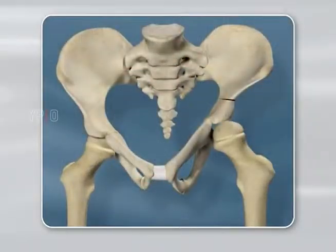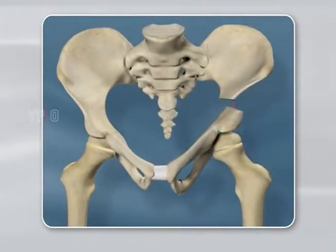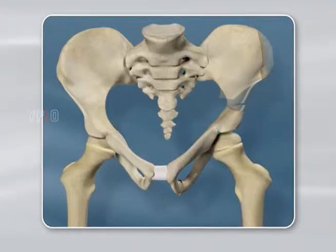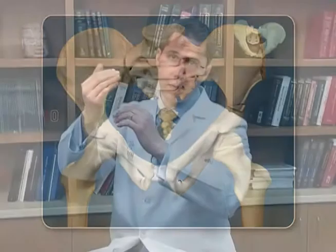The pelvic osteotomy is particularly useful in a patient with dysplasia, which is a shallow socket. If the ball is uncovered and you correct the socket by bringing it more on top of the ball, you improve the coverage and the mechanics in the hip joint. That's the most effective treatment for a patient with symptomatic and severe hip dysplasia.